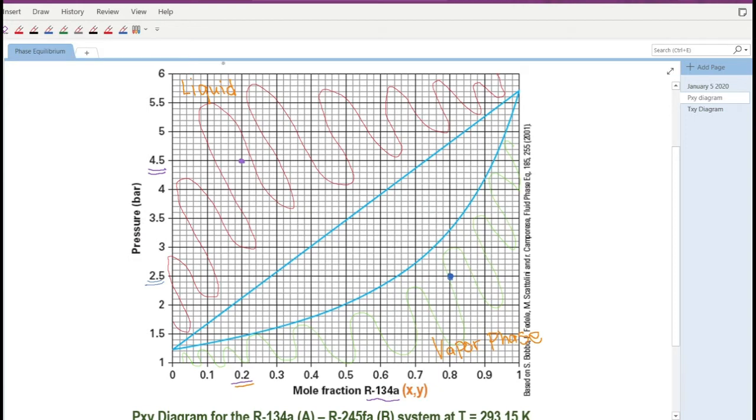While at 2.5 bars and 0.8 mole fraction or let's say 80 mole percent containing R134A, or I'll just call it component A. So that would mean the combination of those conditions would give you a system that only exists as a vapor phase.